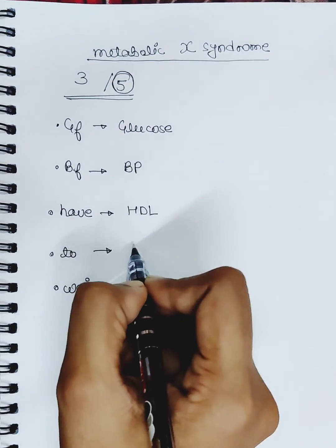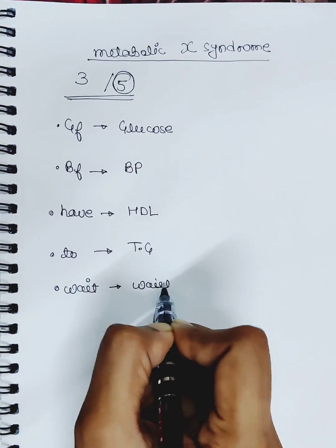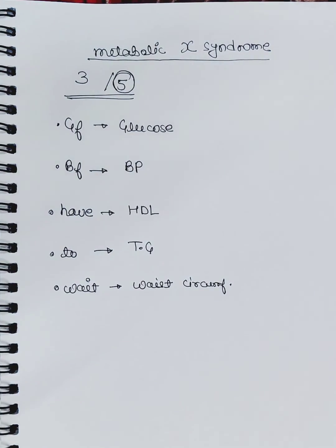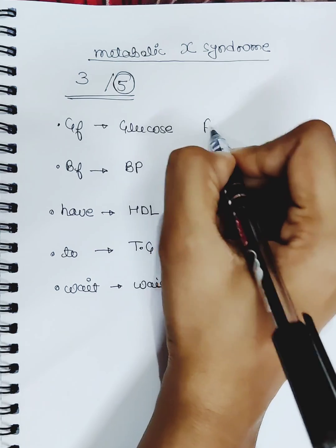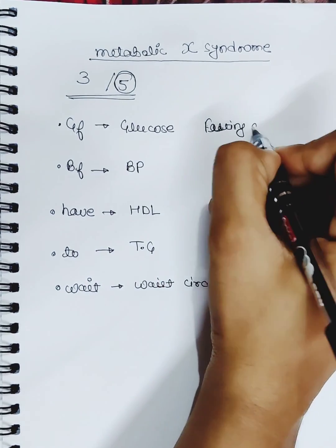T stands for triglycerides, W stands for waist circumference. So what are the exact defined criteria? Fasting plasma glucose should be...